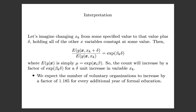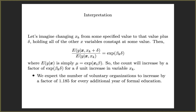The Poisson gives us one other way of interpreting things: exponentiating the coefficient. If we imagine age moving from 25 to 45, that makes delta equal to 20. If we wanted to know by what factor our count should change as we increase age by 20 years, we would exponentiate the coefficient for age times 20 — and that tells us the multiplicative factor of change.